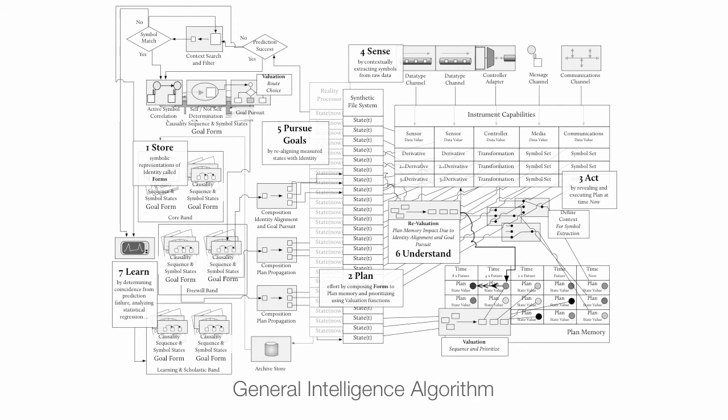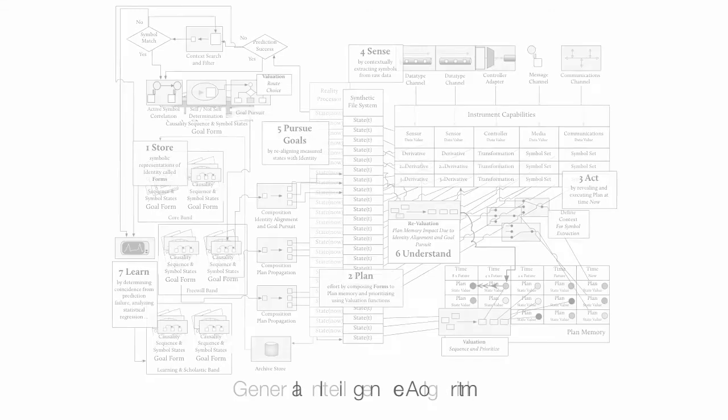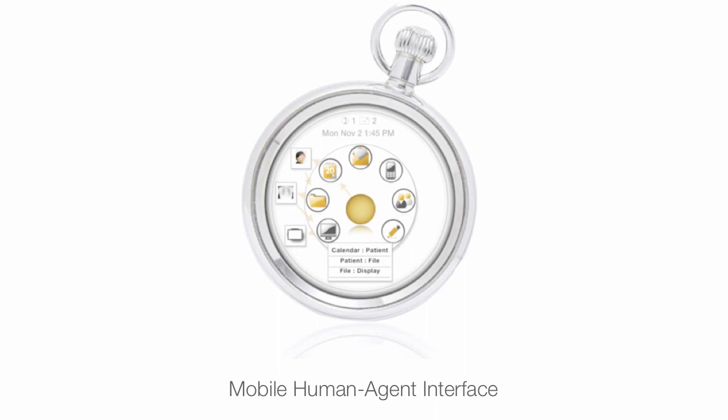The general intelligence algorithm, in the middle there, there's a synthetic file system that enables you to write. Just like a file system on a PC, except you can write forward and backwards in time. So it's a little bit different there as a twist.